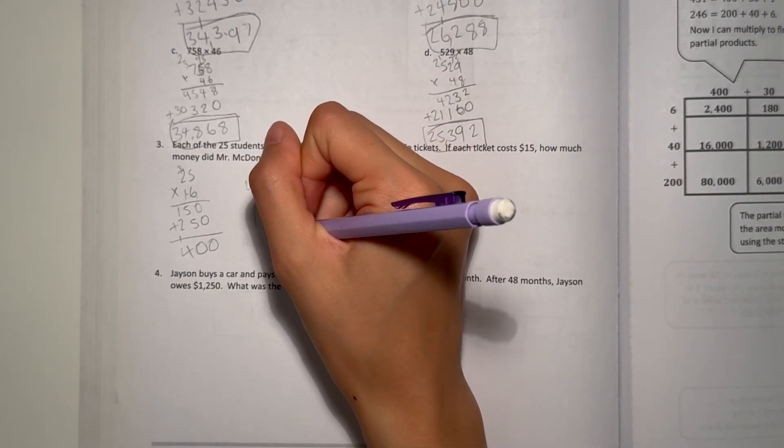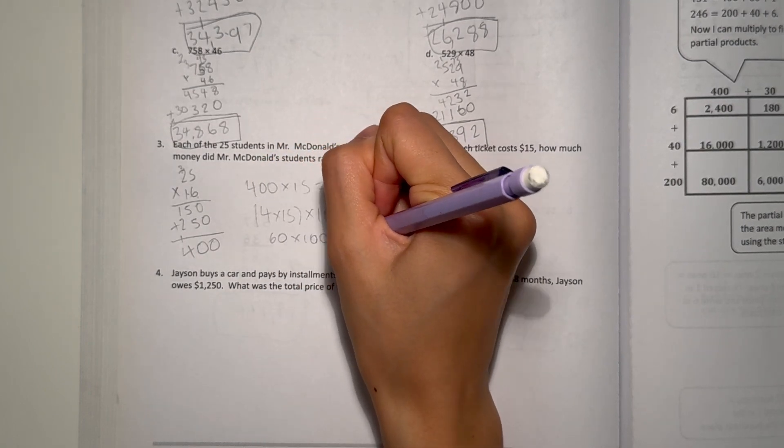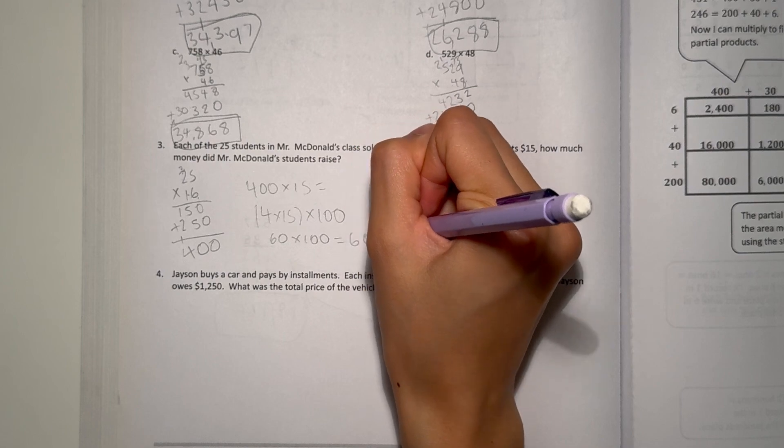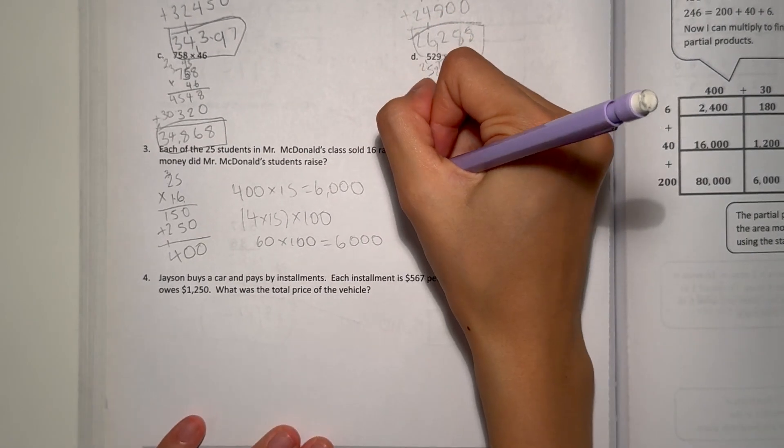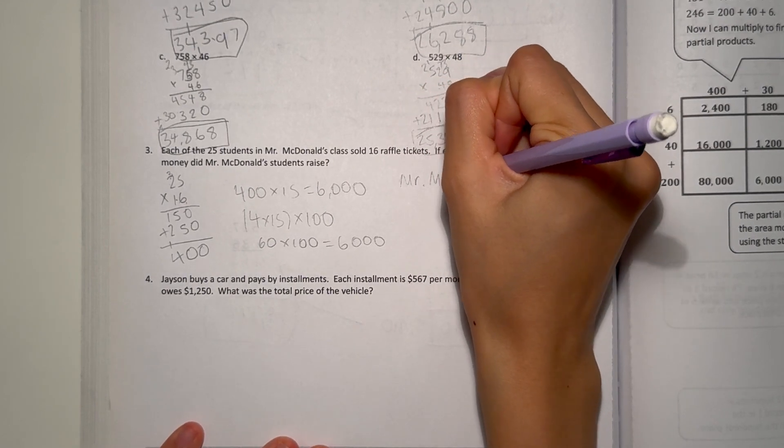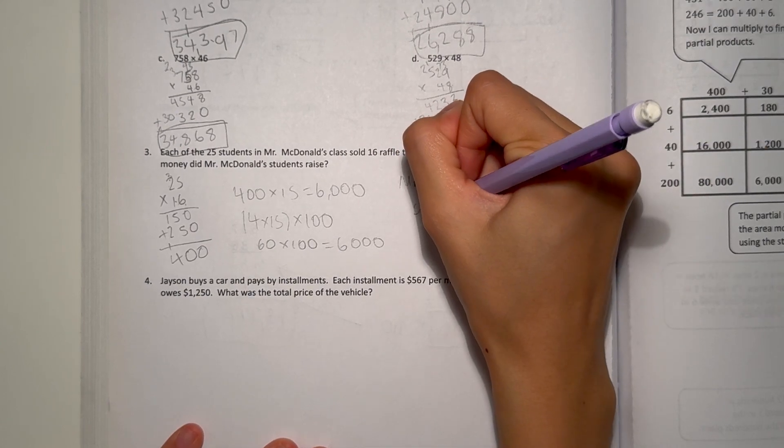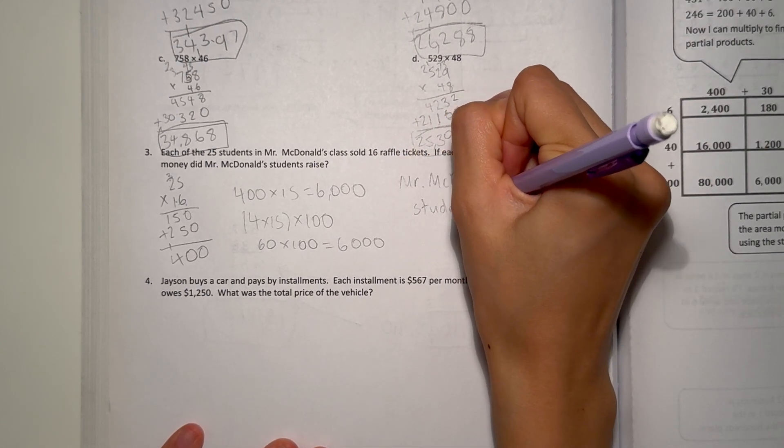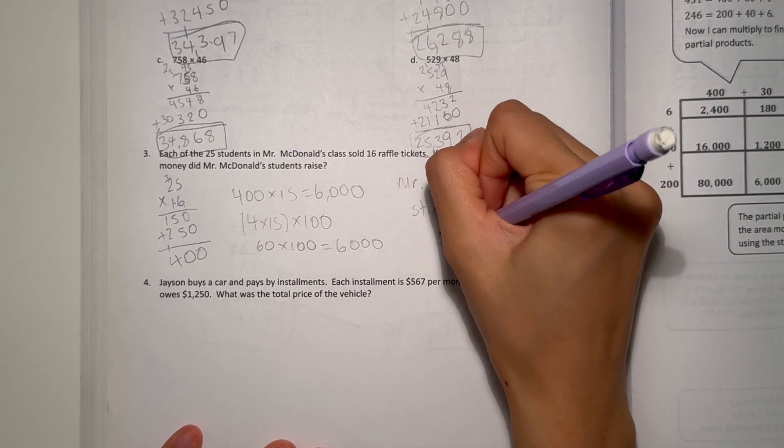4 times 15 is 60. And now times 100, that's just 6 and then add the 0s. So that's 6,000. So Mr. McDonald's students raised $6,000.